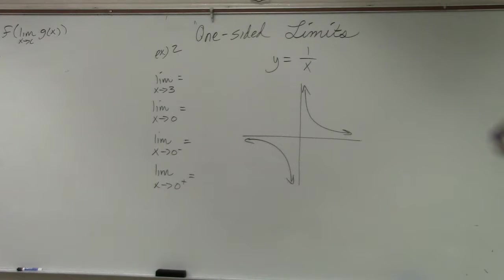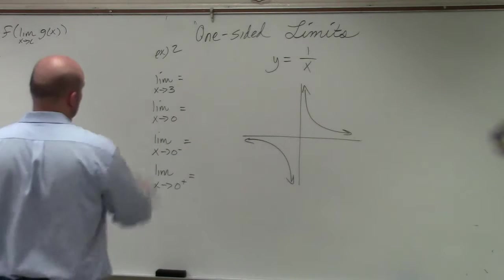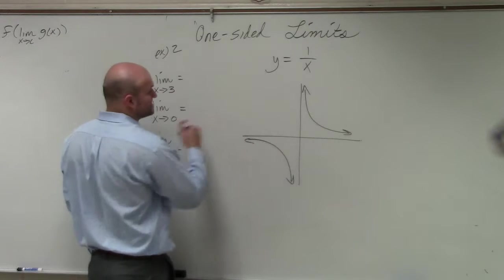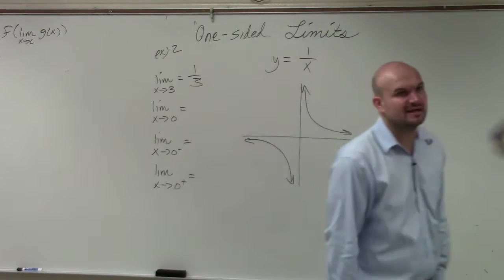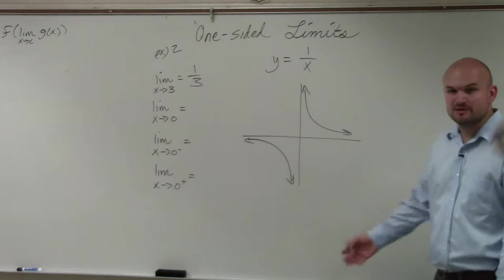My graph is not the best, so if I was going to evaluate for the limit as x approaches 3, that's not really going to help me, but I could use direct substitution to identify that the limit as x approaches 3 is going to be 1/3.